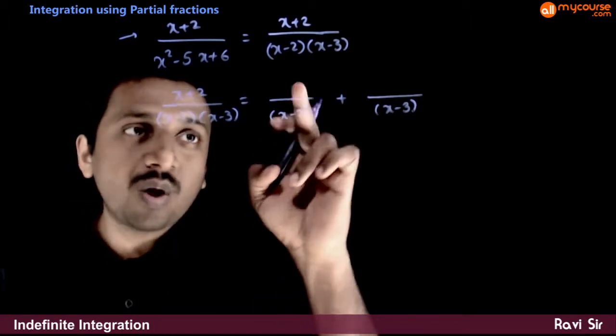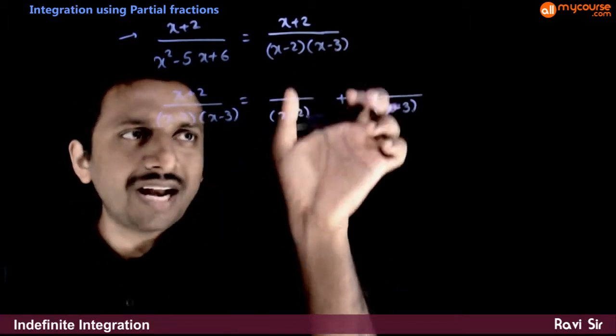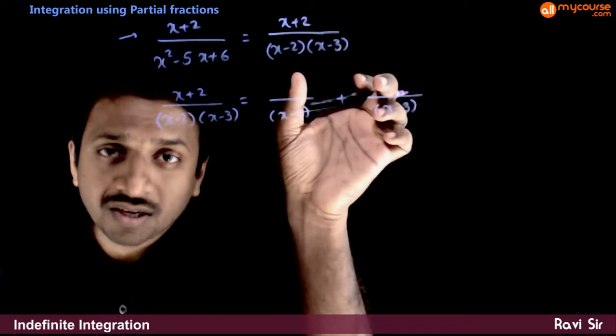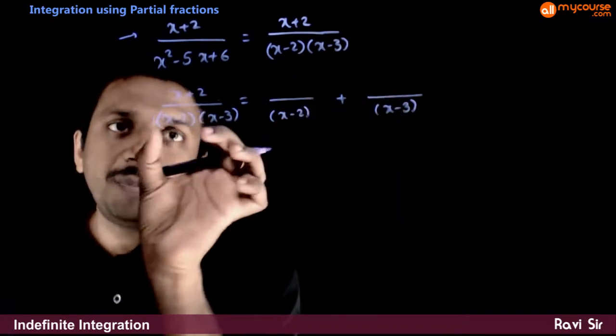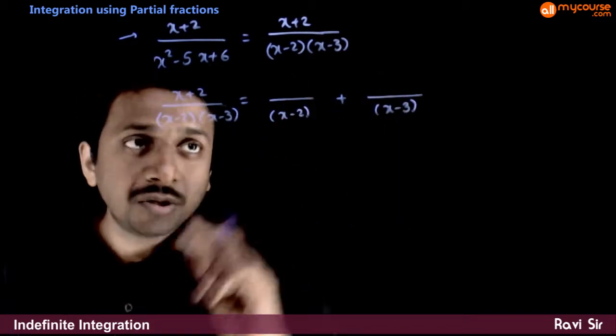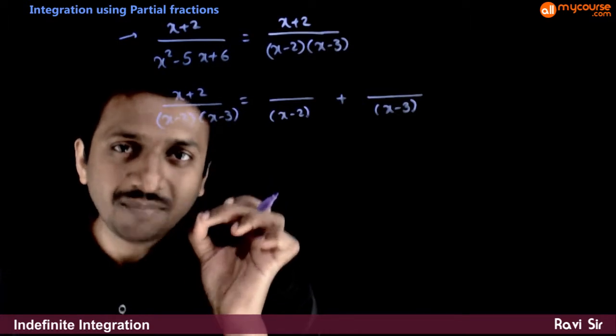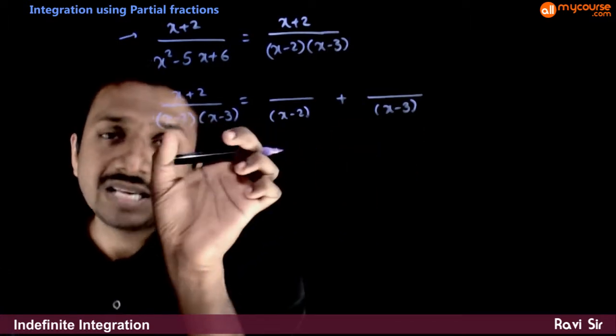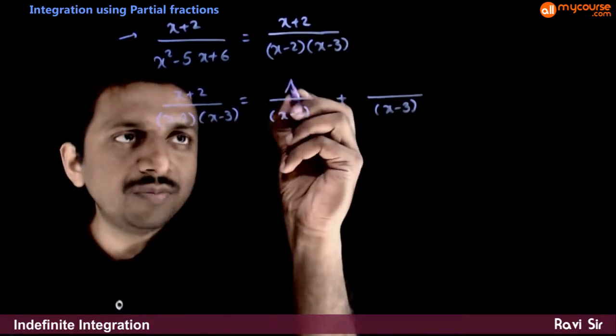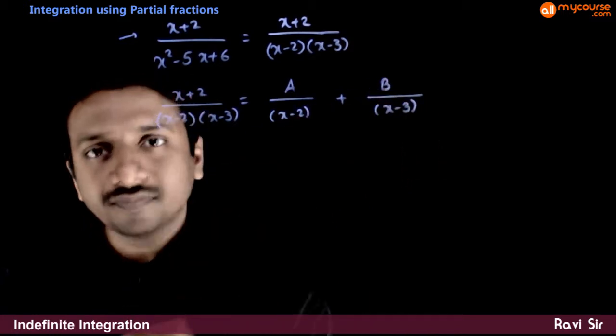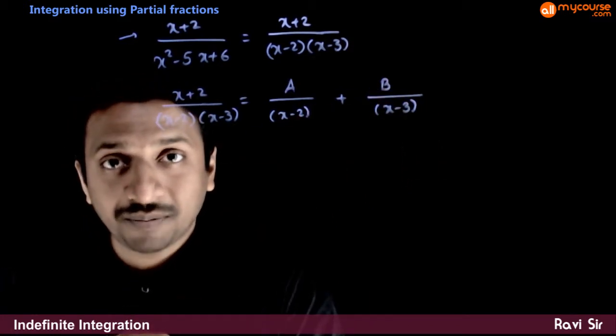Now, the question is what comes in the numerator. If you write any arbitrary numbers in the numerator, this sum will not be equal to this. You have to write some fixed numbers so that the sum of this is same as this. Let us assume that the numbers are a and b.